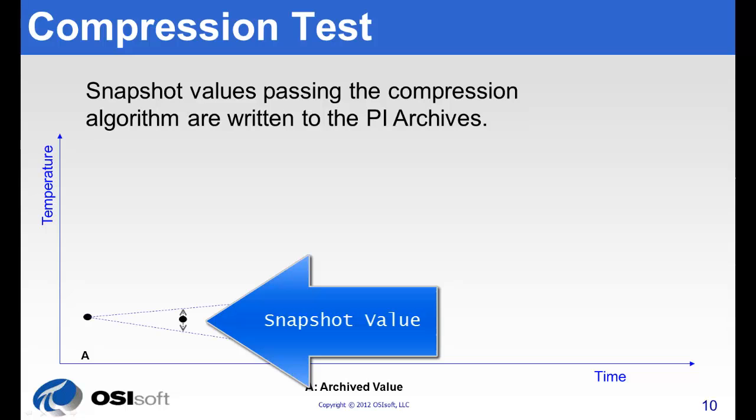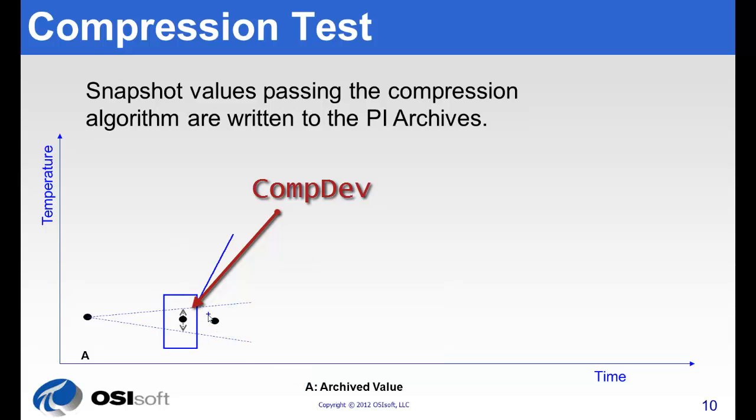Next, we compare it to a snapshot value and we apply the compression deviation to define one angle. And then we compare future values to see if they fall within that angle or outside of it.